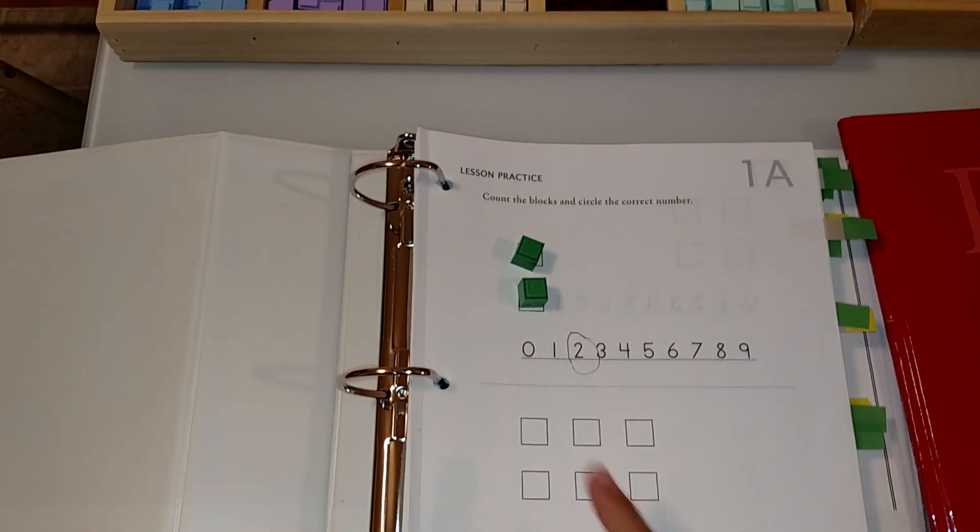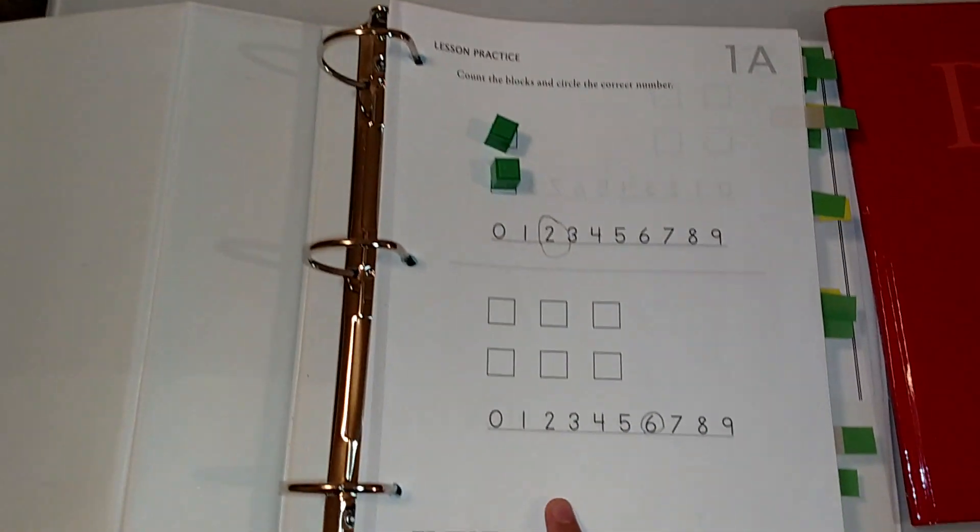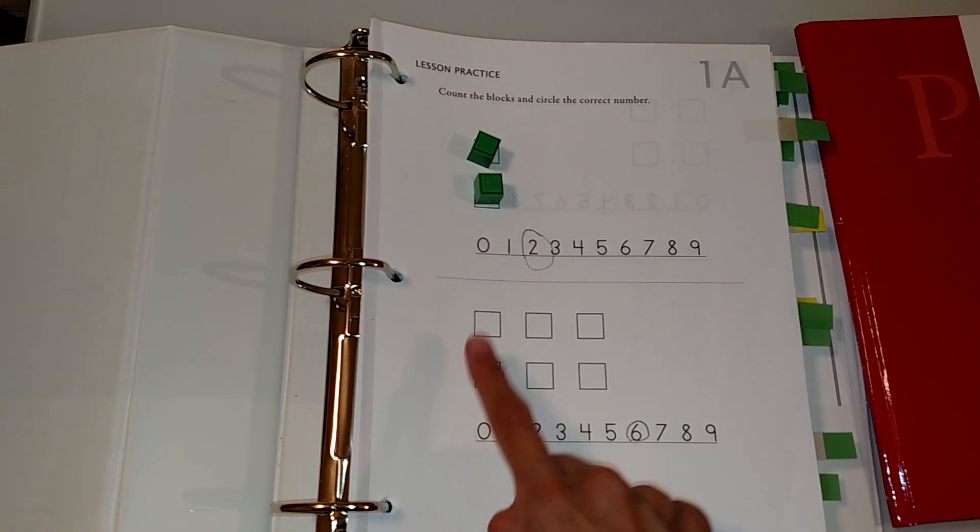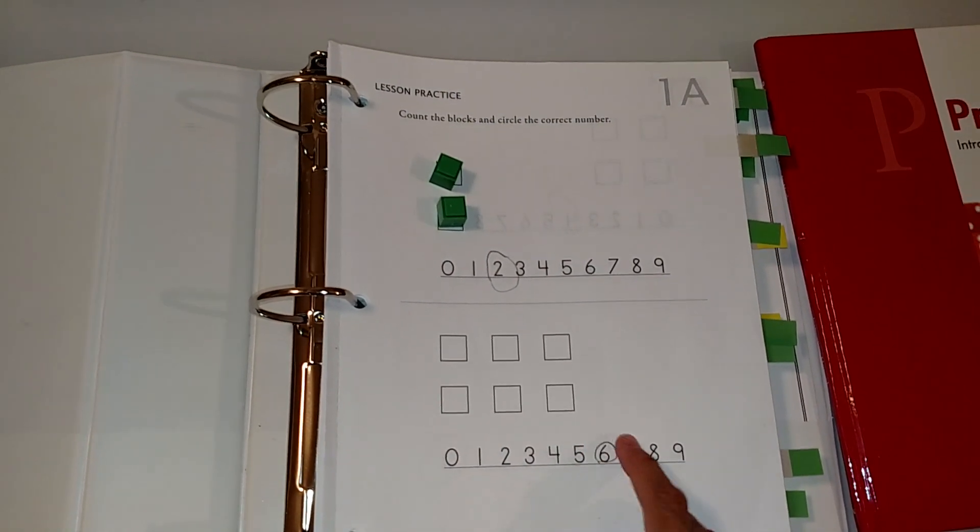Place the little blocks here. One, two, they would count it and then circle the two. They would place the blocks here. One, two, three, four, five, six and then count and circle the six.